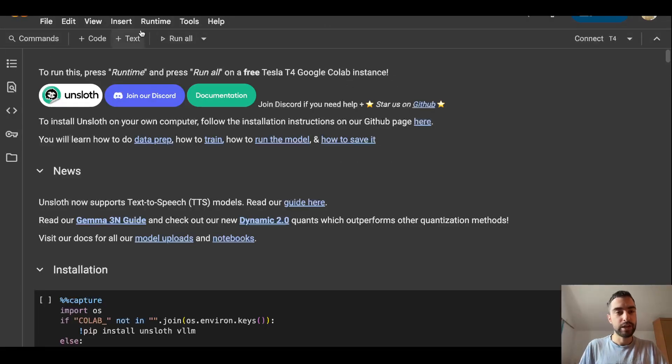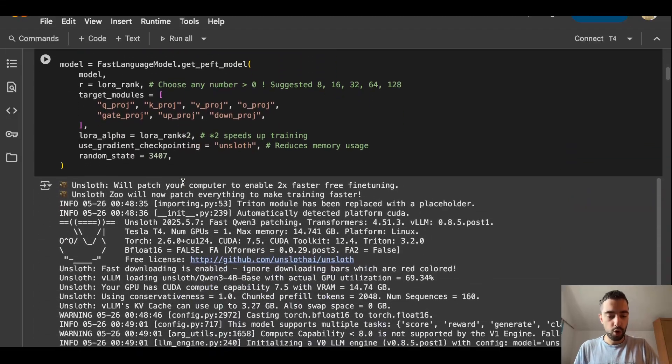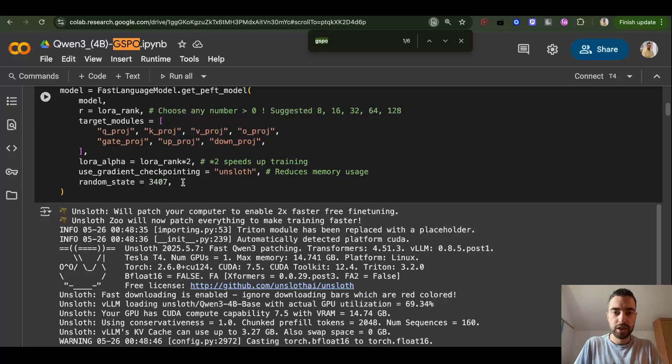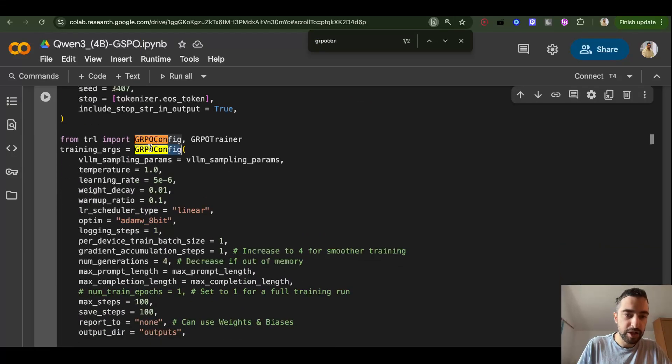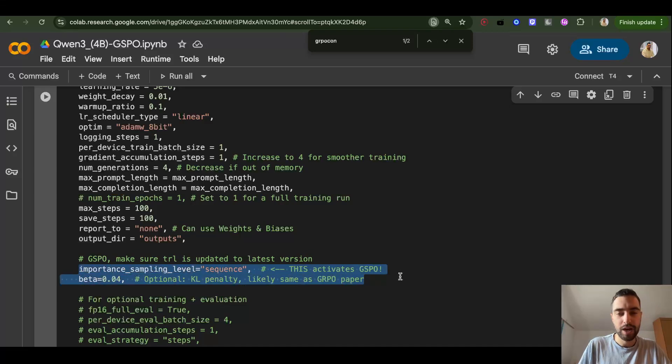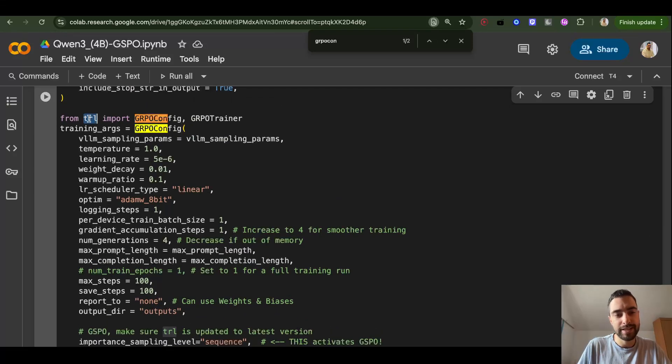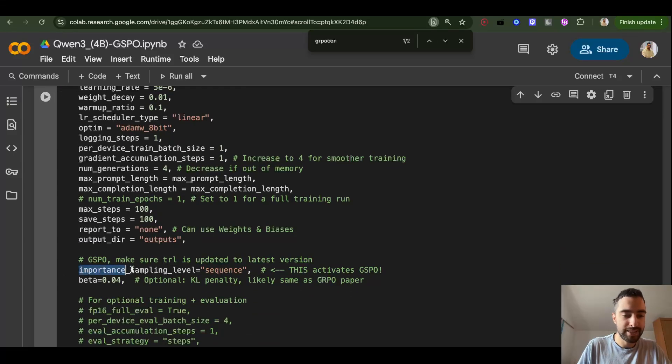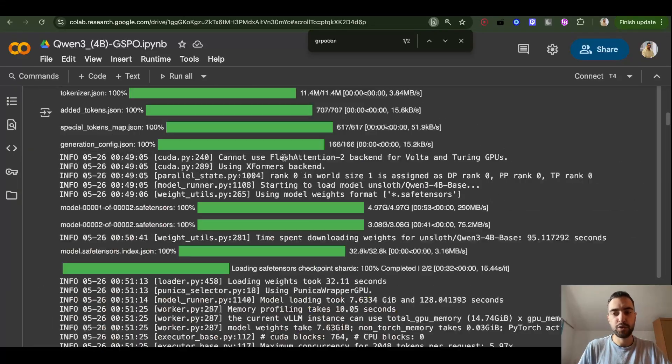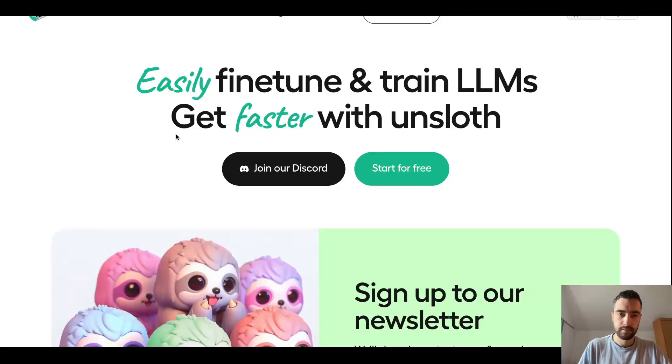And I will show you how to train with GSPO. So you can find URL to this notebook in the description of the video, but this is just Ansloth notebook that I changed. And it's very simple. You take the GRPO notebook by Ansloth, and you scroll down, or you can search GRPO, GRPO config. And here in the GRPO config, we just need to add these two lines to activate GSPO. So make sure you have the latest version of this TRL library because that's where it is. And we just need to add this sequence for the important sampling level. And this is optional beta. And now it will use GSPO. To learn more how to use this, refer to the documentation of Ansloth. So Ansloth. Ansloth.ai.